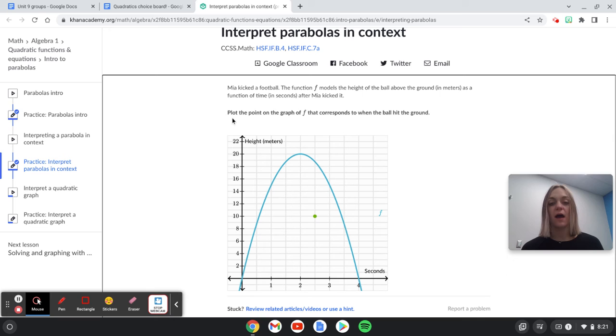Plot the point on the graph of f that corresponds to when the ball hit the ground. So think about she's kicking the ball, it goes up. At some point it turns down and then once we get to y is zero or when the height is zero, that's when the ball is hitting the ground.